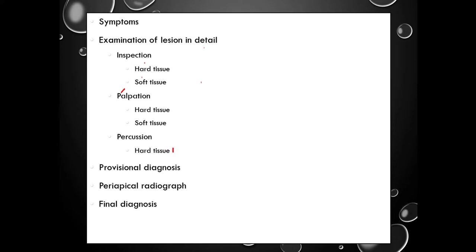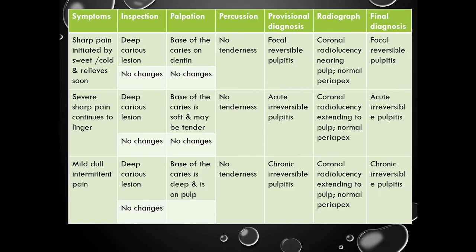Next is percussion. Percussion we will be doing only for the hard tissue. Using the blunt end of the instrument, we will be tapping on the tooth either vertically or horizontally and see if there is any tenderness. Once we are done with the local examination, we will give the provisional diagnosis, then take a radiograph and compare the clinical features with the radiographic features to arrive at the final diagnosis. I have simplified the features of diseases in a tabular form so that it will be easy to arrive at the diagnosis during clinical postings.